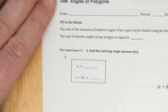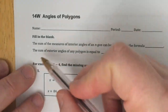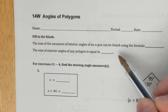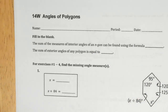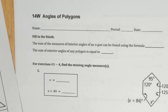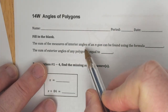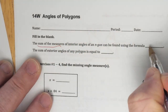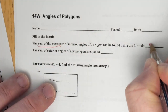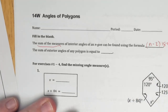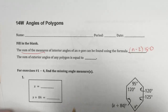Starting on page 14. The sum of the measures of interior angles of an N-gon can be found with a formula. Here are all the formulas. The sum of all the measures of interior of an N-gon would be N minus 2 times 180 degrees. That's the sum of all the measures.